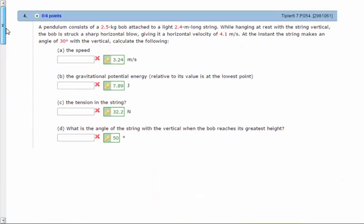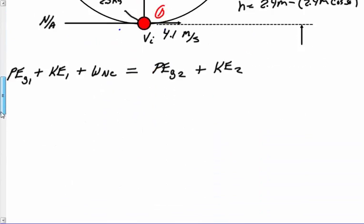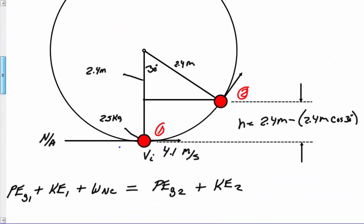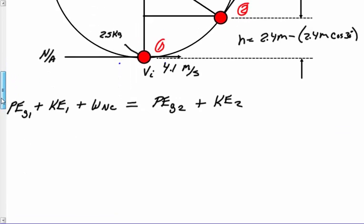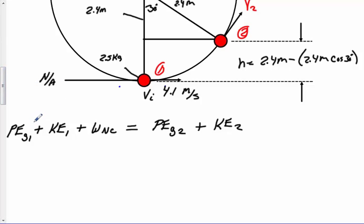What we're looking for is we want to find out what the speed is. We're looking for the speed right here. We're going to call this V2. That's what we're looking for. Now we ask ourselves, can we cancel anything out? Well, I have relative to this position, relative to the neutral axis, I have no gravitational potential. That's zero. There's no work being done by non-conservative forces. I have no friction here, no air resistance. That goes to zero. When I get up here, I'm going to have gravitational potential and I'm going to have kinetic. At the bottom, obviously I have kinetic here because I have velocity.